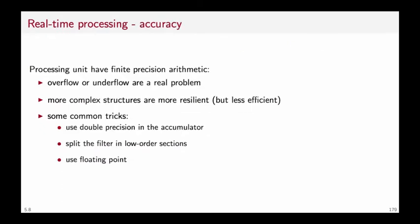Another problem with real systems is accuracy. Processing units will always have a finite precision, even if they use floating point. So overflow and underflow are a real problem. You can use more complex filtering structures to combat some of the accuracy problems, and other tricks involve using double precision inside the filtering loop. So, for instance, if your architecture is 32 bits, inside the filtering loop, you will use a 64-bit arithmetic. You can split the filter into low-order sections, or you can use floating point, which, although slower than the fixed point, can help combat some of the overflow issues.